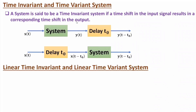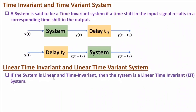Now I will discuss classification with respect to linear time invariant and linear time variant systems. A linear time invariant system, or LTI system, is one that follows linearity as per the superposition theorem and also satisfies the time invariant condition. If a system is both linear and time invariant, then it is an LTI system.